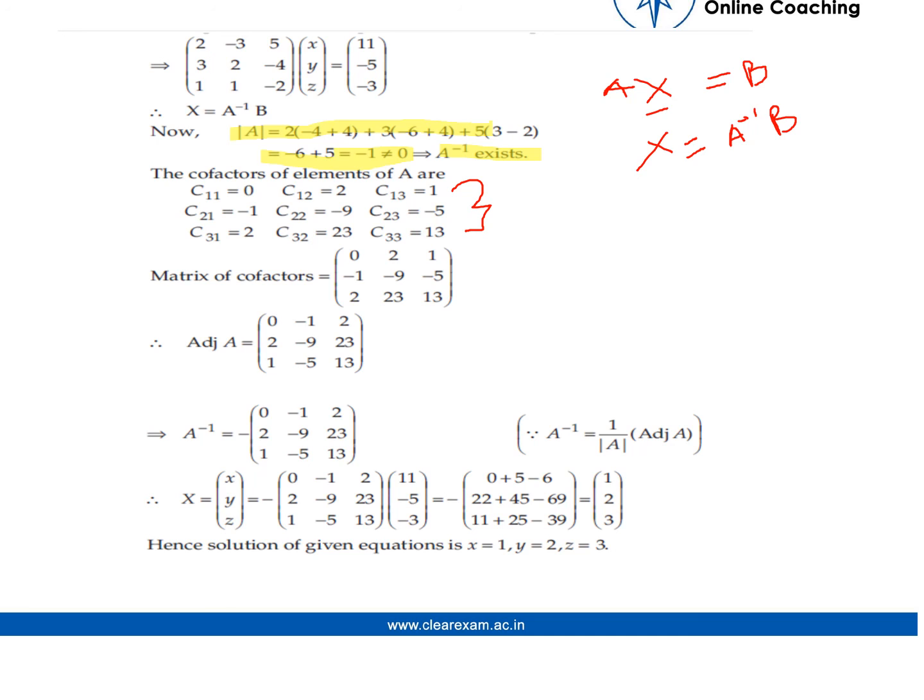Then we make the matrix of cofactors. If we transpose the cofactors matrix, we get the adjoint of A. And as we know, A inverse equals 1 by determinant of A times adjoint of A. So we get A inverse as [0, -1, 2; 2, -9, 23; 1, -5, 13].